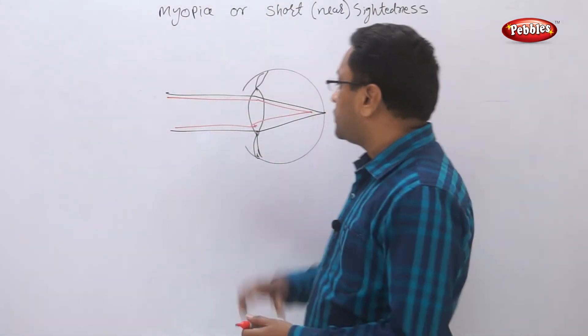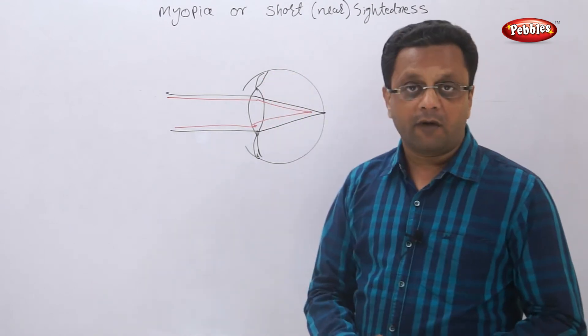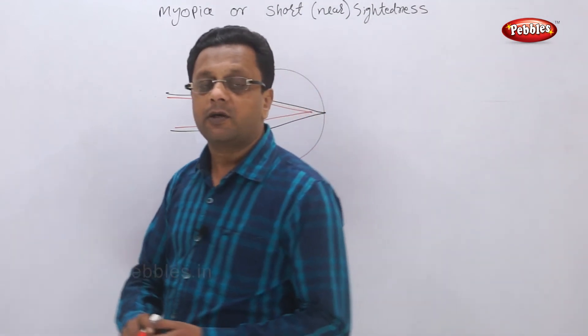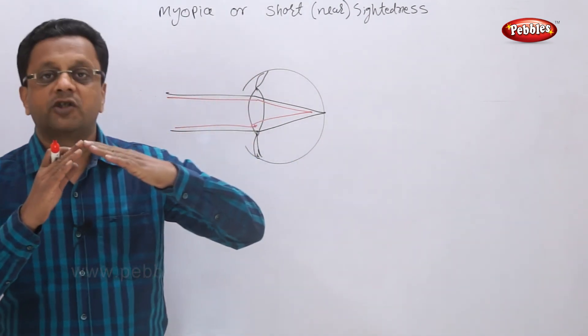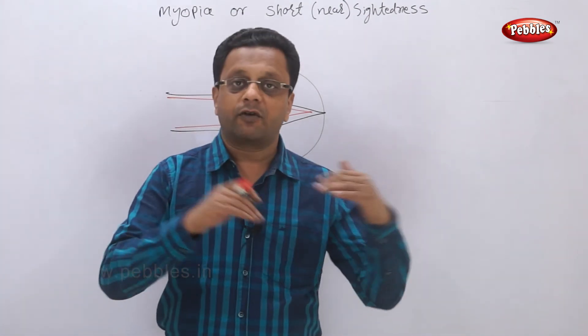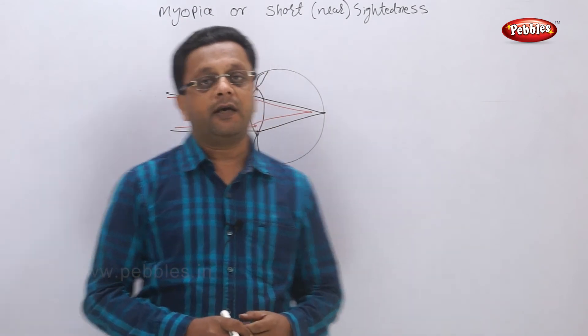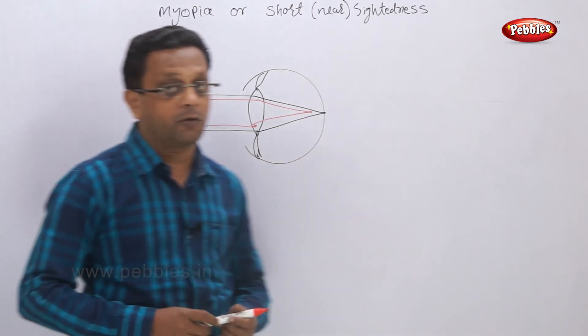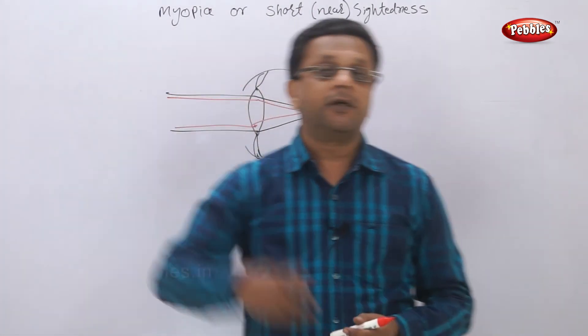So in this case the converging power of the lens has become very high. What do you mean by converging power? That is concentrating the light rays after passing through it. That becomes high and image is formed before retina. And you will not see long distance objects or you will see blurred images.